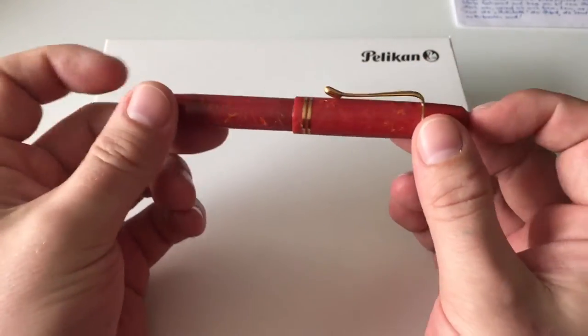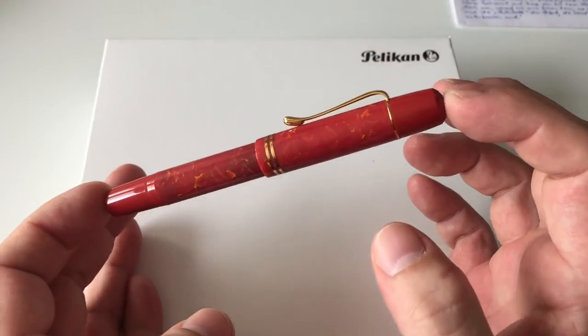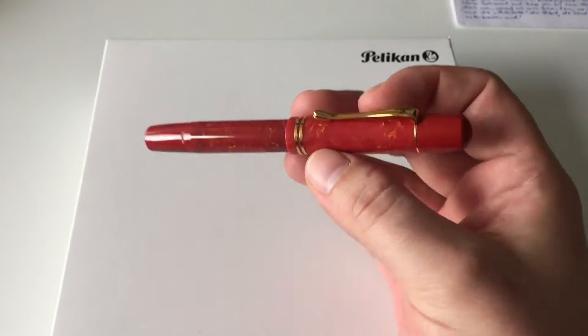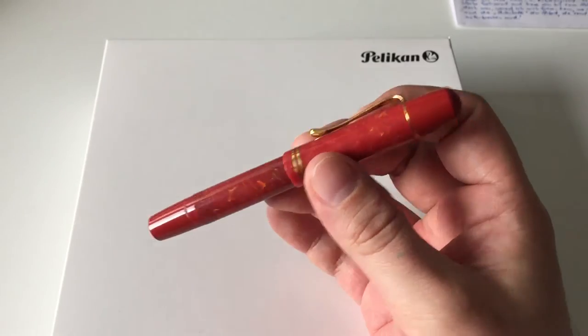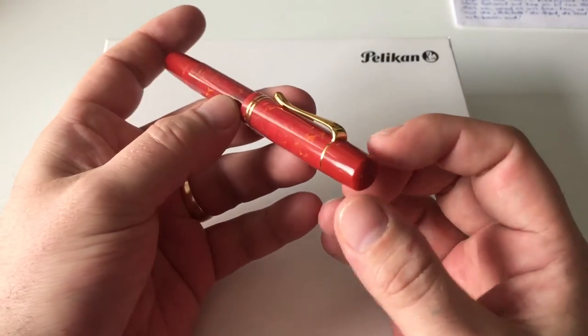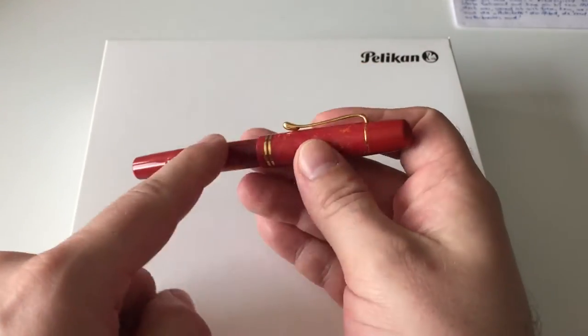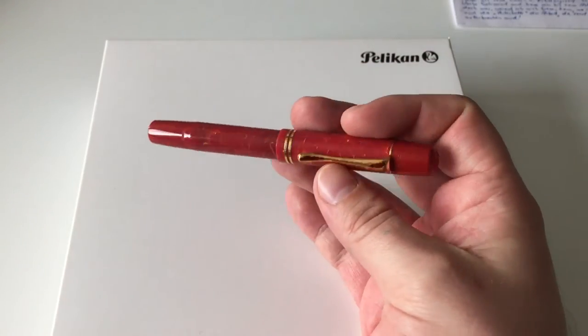The Pelikan M101N is in reminiscence of a vintage pen. There was a Pelikan 101 back in the days, a 1930s pen design from 1937. This is like the fourth vintage re-release that Pelikan has made.